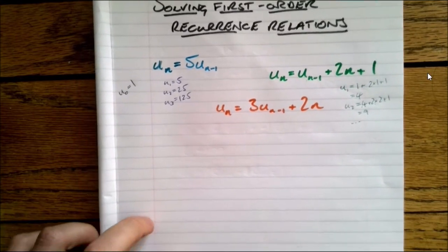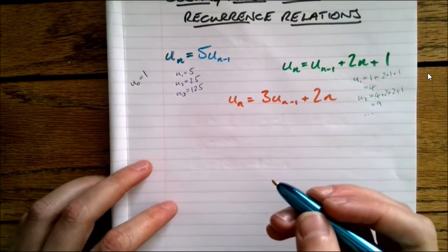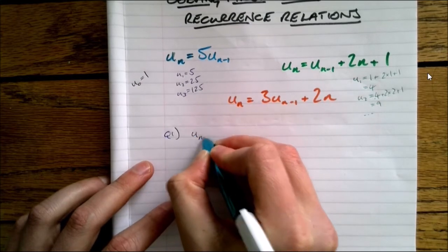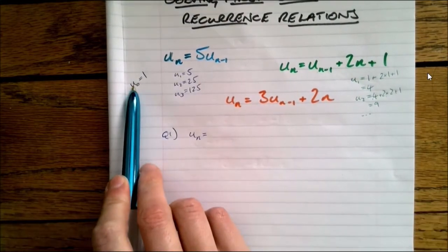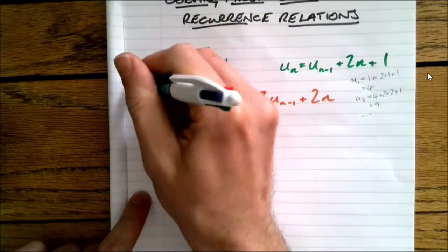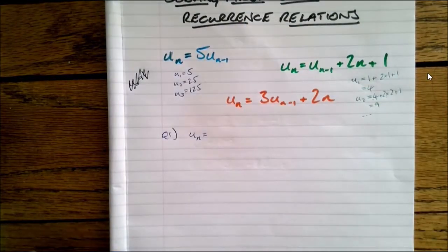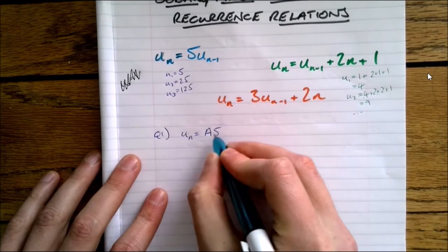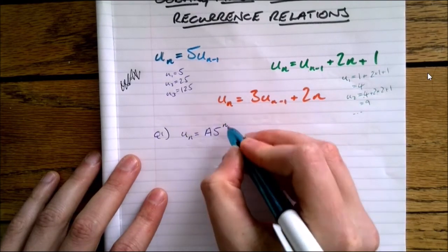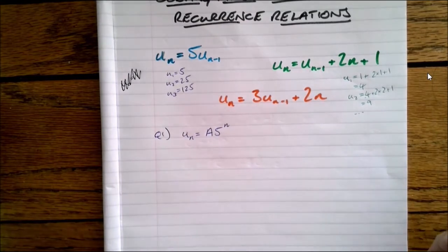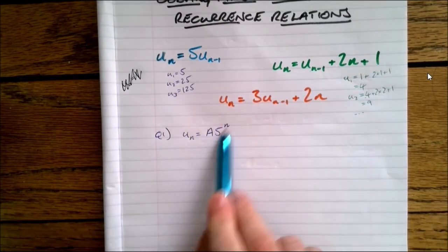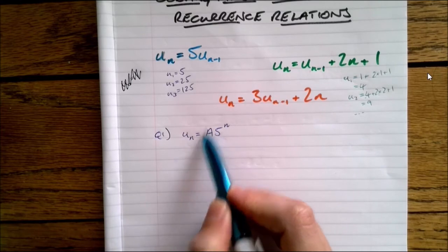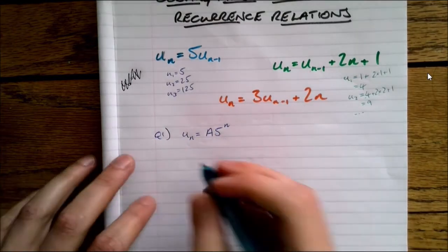Let's start with the blue one. If it's just multiplying by the same thing each time, it's going to start with some number — let's call it A — and then multiply by 5 each time. The way we capture multiplying by 5 each time is just 5 to the power of n. So the solution is A times 5^n. If the question gives us U0 or U1, we can substitute that in and find A. That's it — we're done.